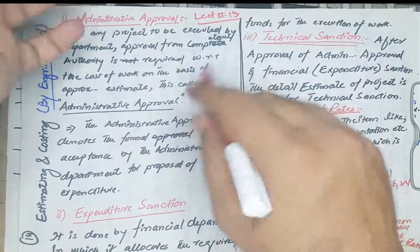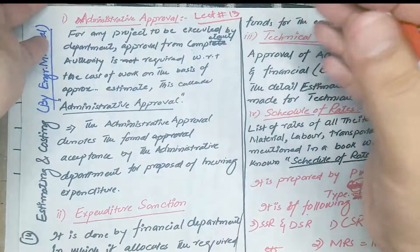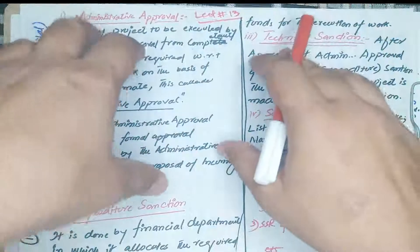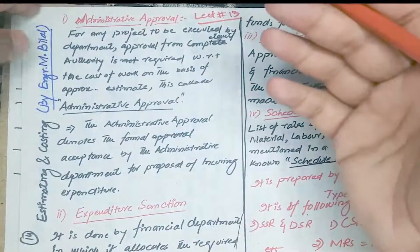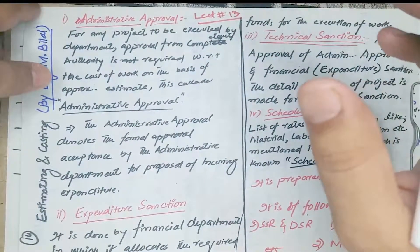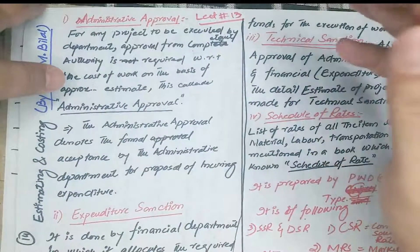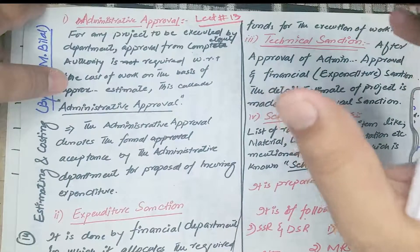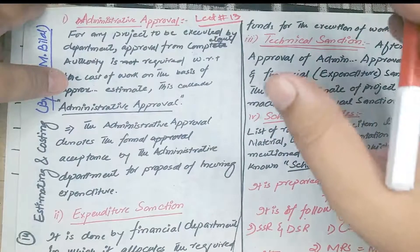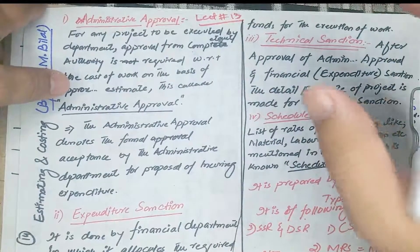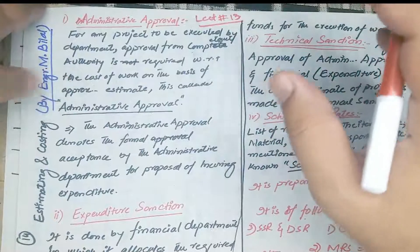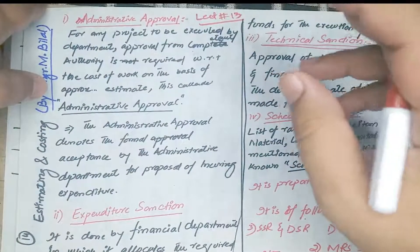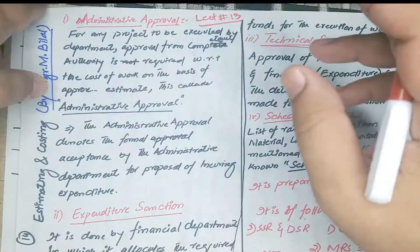In simple words, Administrative Approval means that when a department wants to execute a project, they need to approve the rough cost or rough estimate by the competent authority or competent forum. This type of approval is called Administrative Approval.